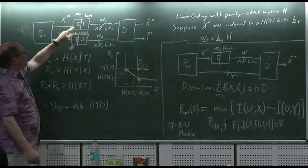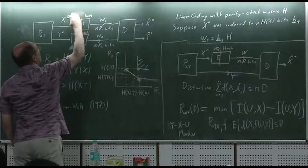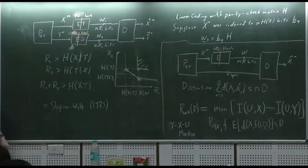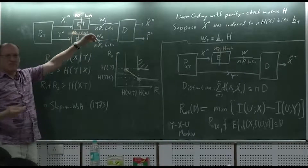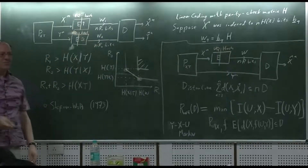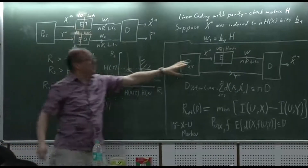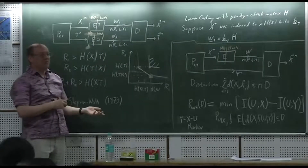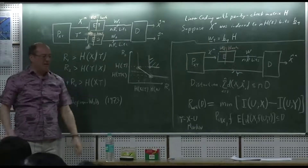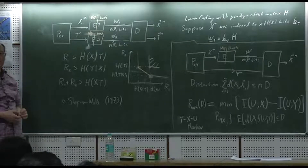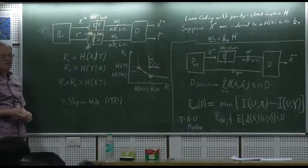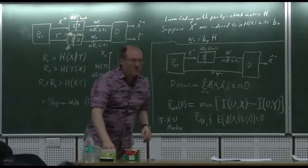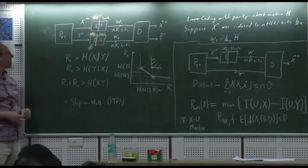This approach — VQ then hash — has been applied to the Berger-Tung problem, named after Toby Berger's student. They derived inner and outer bounds, but they don't match in general. They do match for Gaussian sources using the entropy power inequality and Ozerow's trick from the Gaussian multiple description problem.